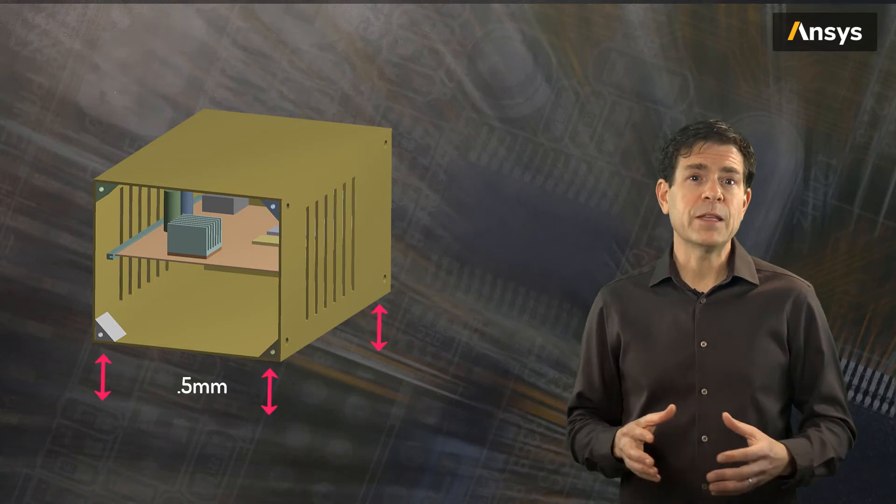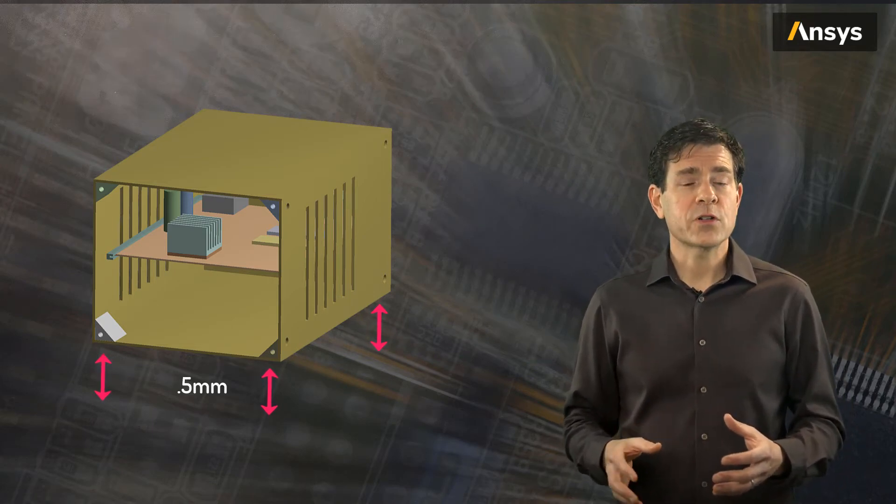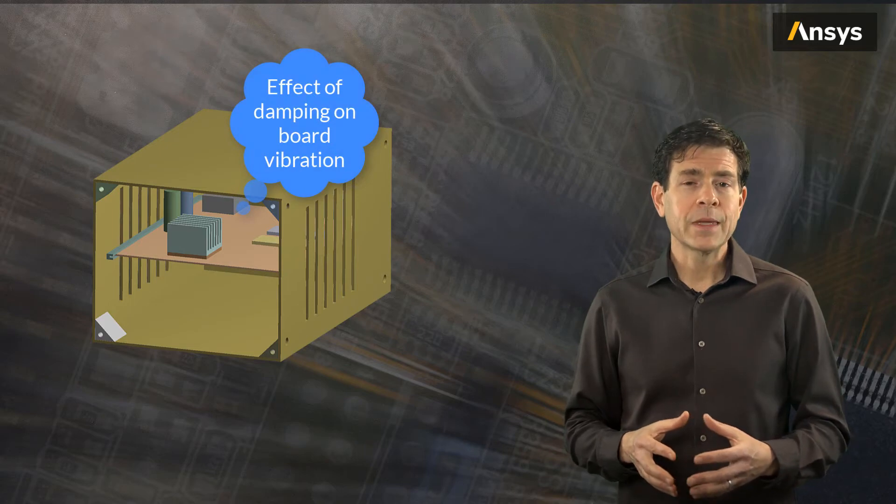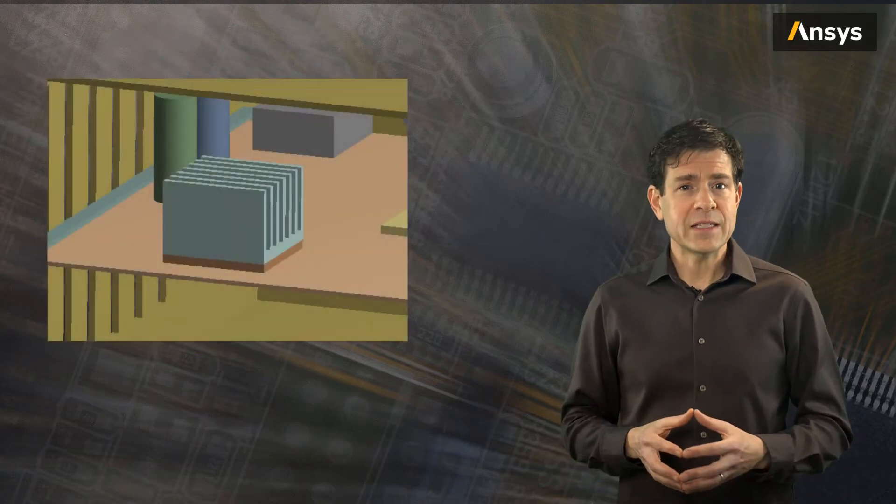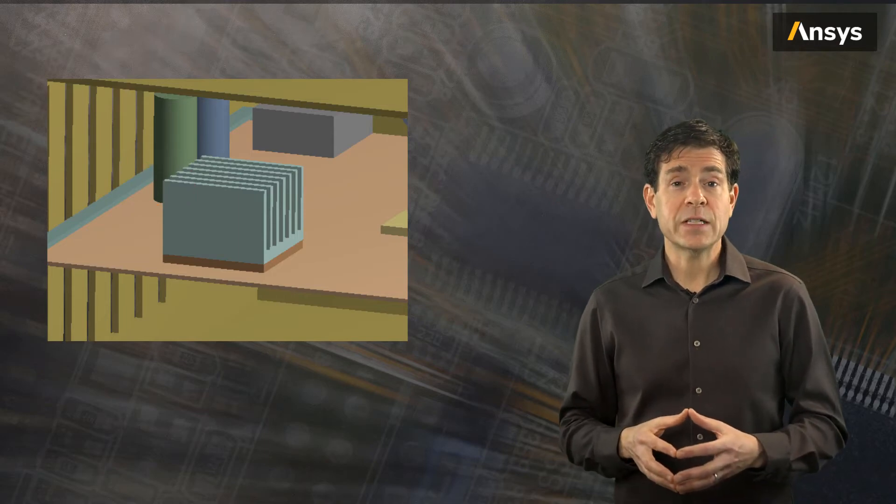Let's assume the vibration input is a uniform displacement of 0.5mm amplitude at the base of the enclosure, and this excitation takes place over a specified frequency range. What we wish to understand is what is the effect of the damping on the deformation of the board. If we look at the corner of this heatsink, we can compare the displacement for two different specifications of the damping ratio.